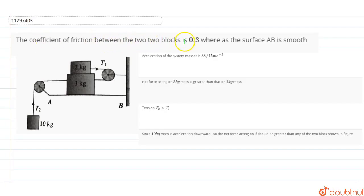The coefficient of friction between the two blocks is 0.3. So here the coefficient of friction is 0.3, and surface A is smooth. Now I am going to give you some options and tell you which option is okay.